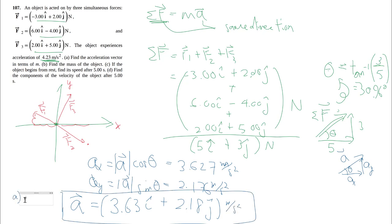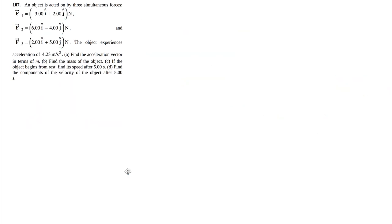So part a, the acceleration vector is 3.63i plus 2.18j meters per second squared. i and j components perfectly define a vector, so we're good to go there. Now I've done part a, let's move on to part b. Part b, we want the mass of the object.